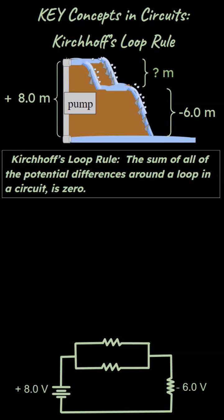Are you a physics student learning how to do circuit problems? Let's talk about Kirchhoff's loop rule. The loop rule is the sum of the potential differences around a loop in a circuit is zero.